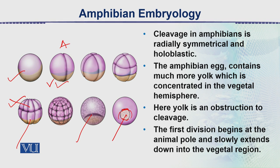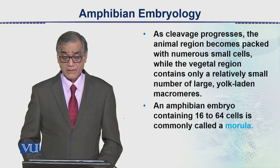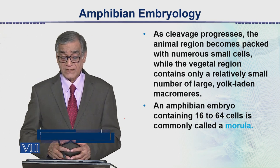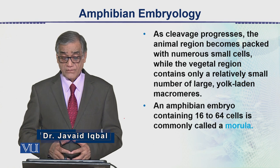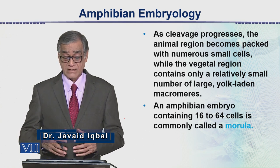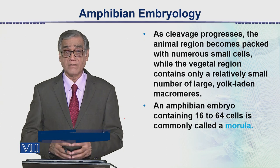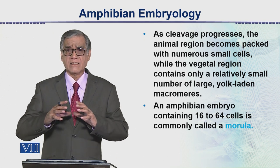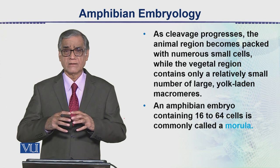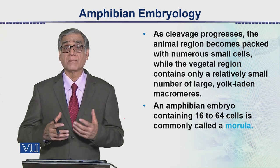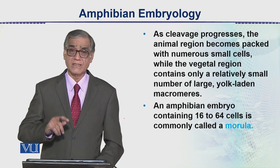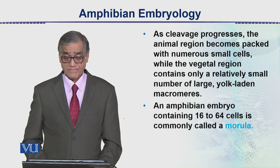Regarding the second cleavage, these are the same things — micromeres and macromeres — that we already saw. During the cleavage process, the animal region becomes packed with numerous small cells, while the vegetal region contains only a relatively small number of large yolk-laden macromeres. When cells like these are formed, that is called a morula. The word morula comes from mulberry, because it resembles a small rounded mulberry — that is the basis on which the term morula is given.